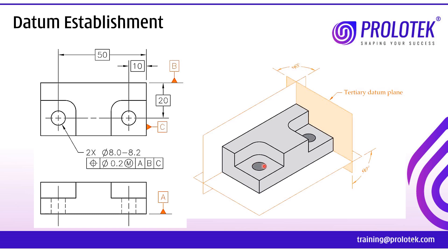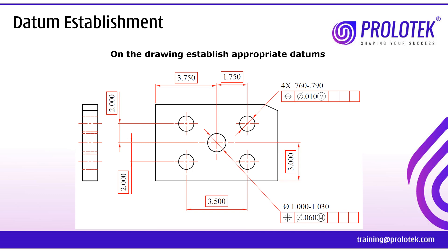The intersection of these three planes is called the datum point, and from the datum point only the tool will be moved. For example, to make one hole — from this reference surface at a distance of 20 mm and from this surface at a distance of 50 mm — I move the tool and make the hole. To make the other hole — from this reference at a distance of 20 and from this surface reference at a distance of 10 — I make that hole. Based on the datum only, the tool will be moved from those datum references.